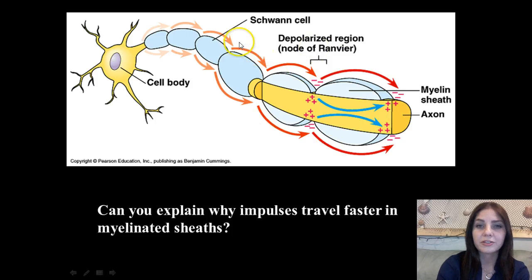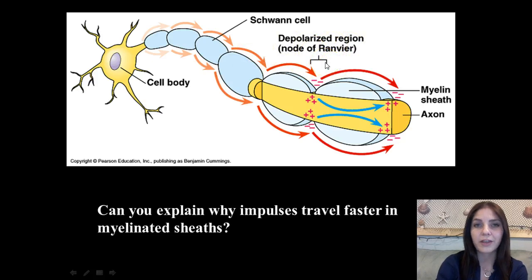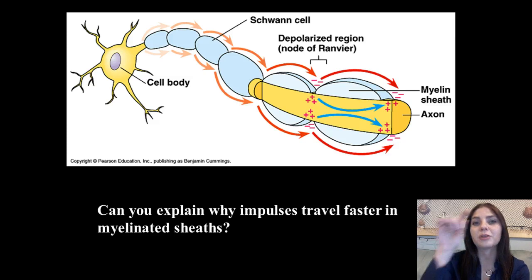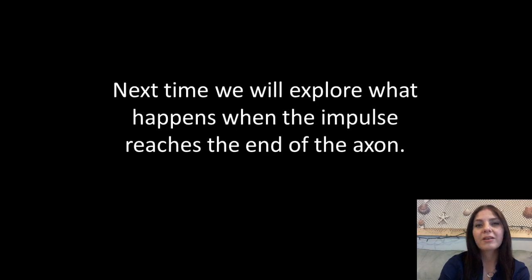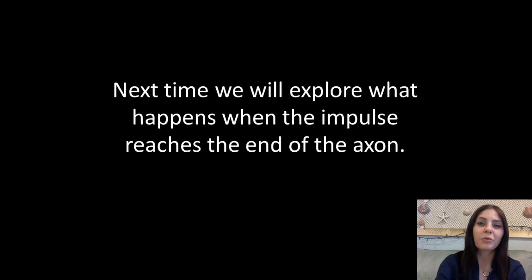Looking at this diagram, you can see the Schwann cell, our cell body, and the depolarized regions at the nodes of Ranvier, where the potential is being transmitted from one node to the next. Make sure you can explain why impulses travel faster in myelinated axons. Next time, we're going to explore what happens when the impulse reaches the end of the axon and how it gets to the next one.